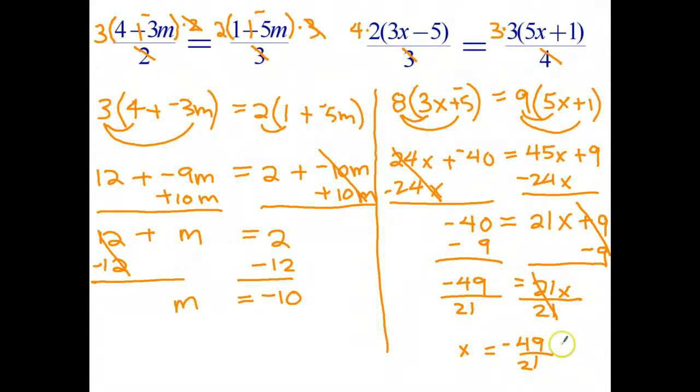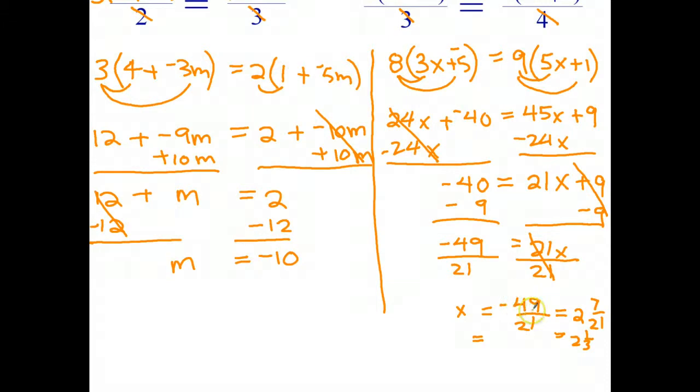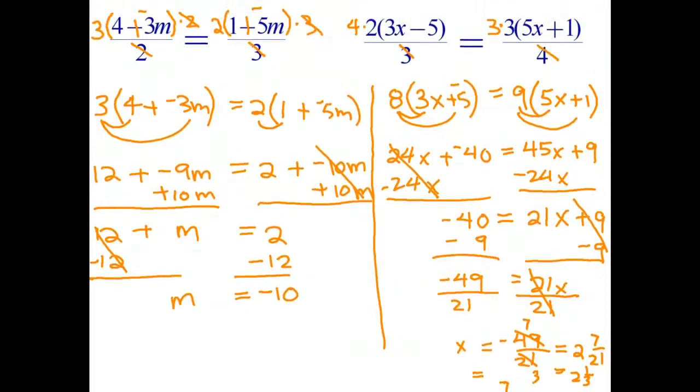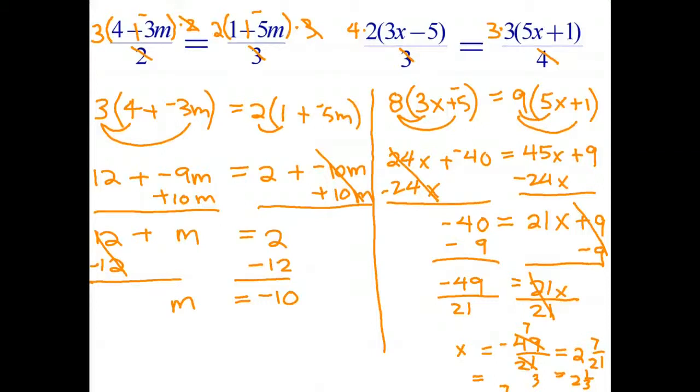And now we're at the x on the left-hand side equals negative 49 on 21. And normally we just leave those as improper fractions. If you want to change it to a mixed number, 21 goes into 49 twice. Two 21s are 42. So that leaves, oh, it can be simplified. So that was worth doing. I should have said I can divide top and bottom by 7. 7 goes into 21 three times. 7 goes into 49 seven times. And I get 7 over 3 or 2 and 1 third. And once again, I wouldn't bother substituting that back into the original equations, because that's going to be too hard to do. So just go ahead and double check your solution.